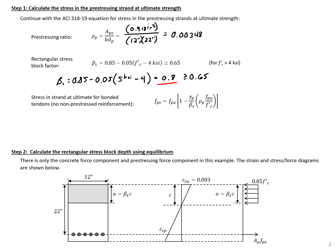We can now calculate f sub ps by plugging in these values: 270 ksi times (1 minus 0.28 divided by 0.8 times 0.00348 times 270 ksi divided by 5 ksi).